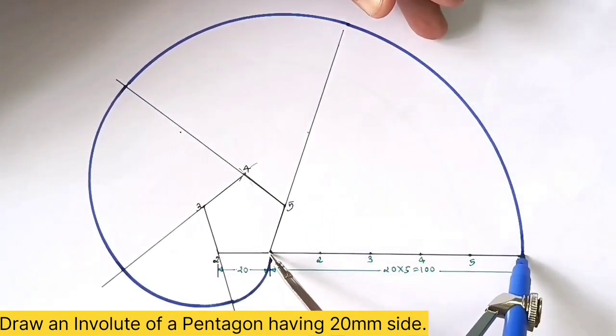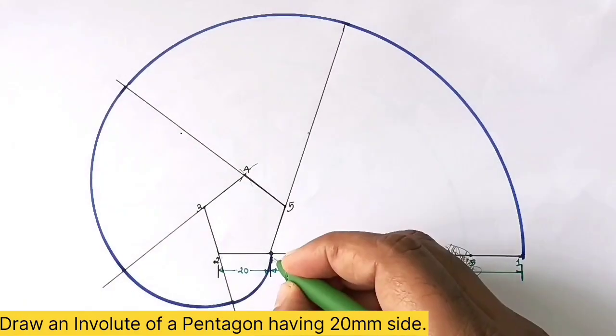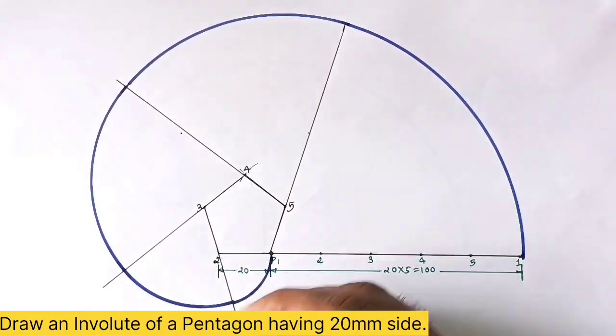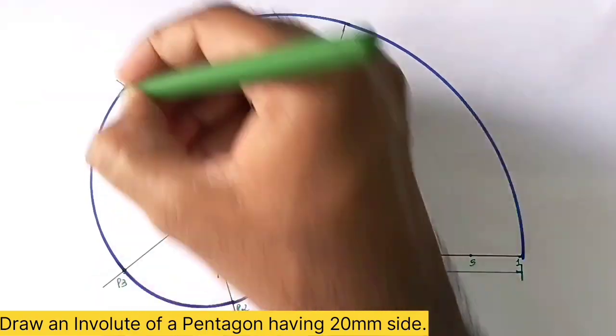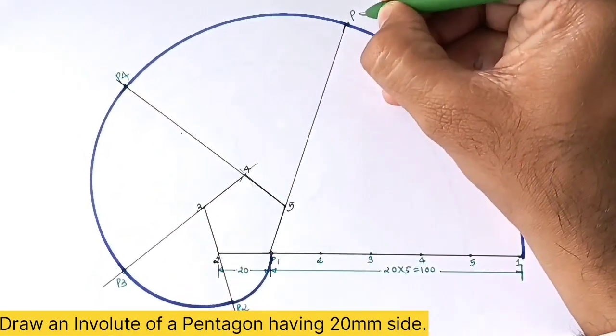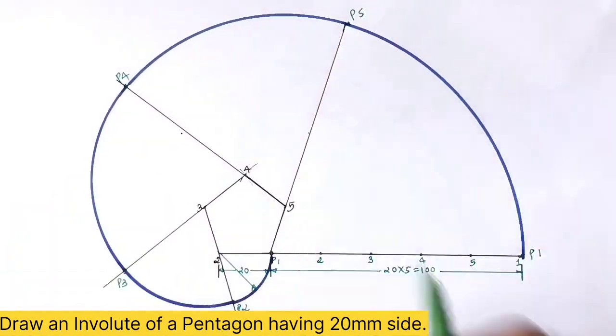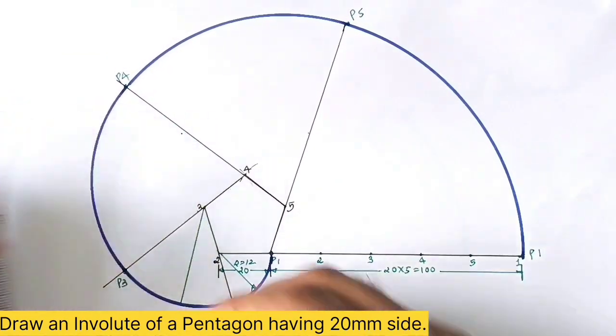This completes the required involute of a pentagon. After this, in the last step, label the locus points P1, P2, P3, P4, P5, and P1, and give the dimensions.